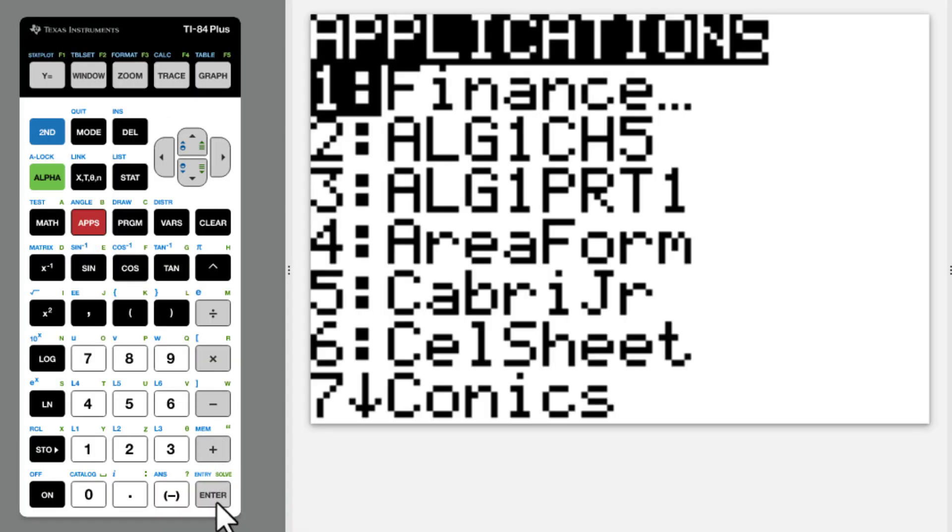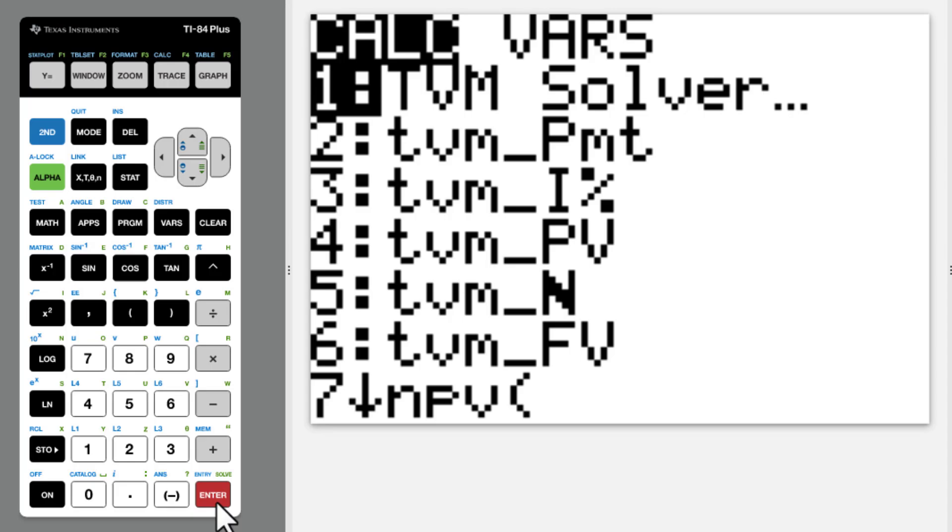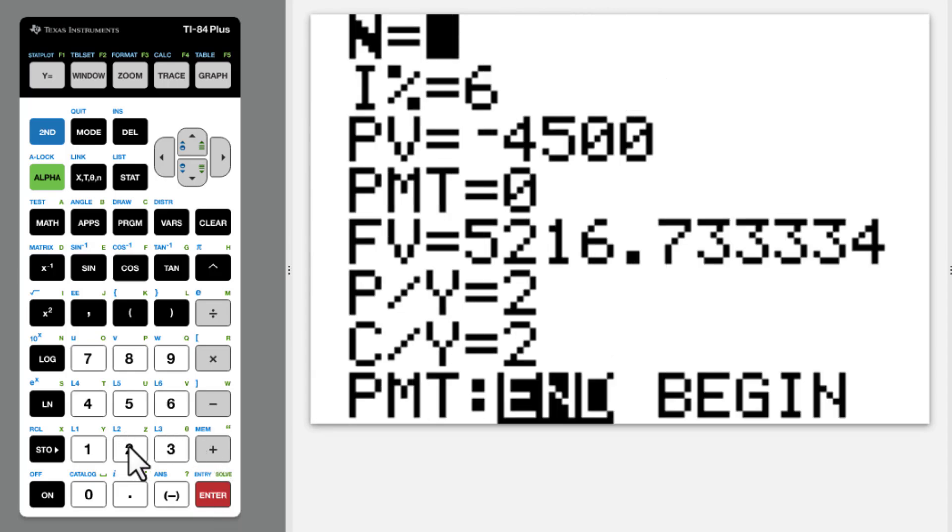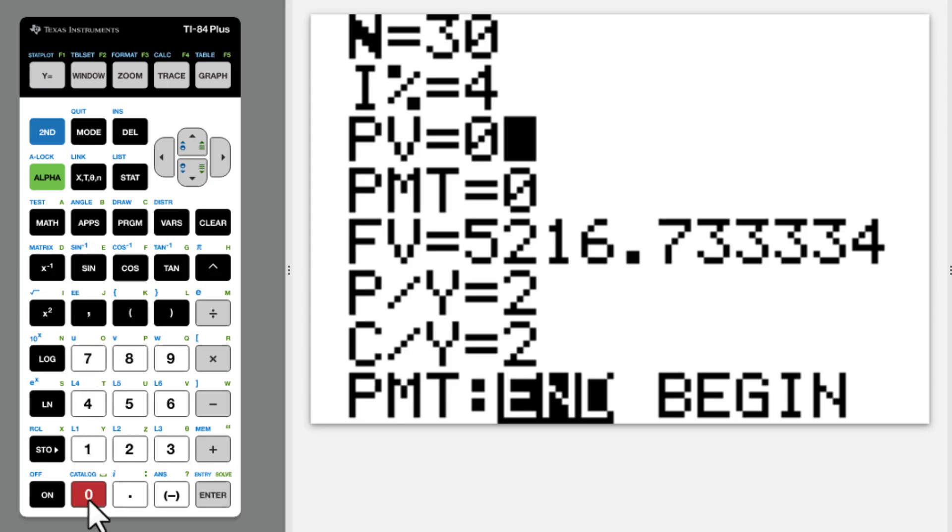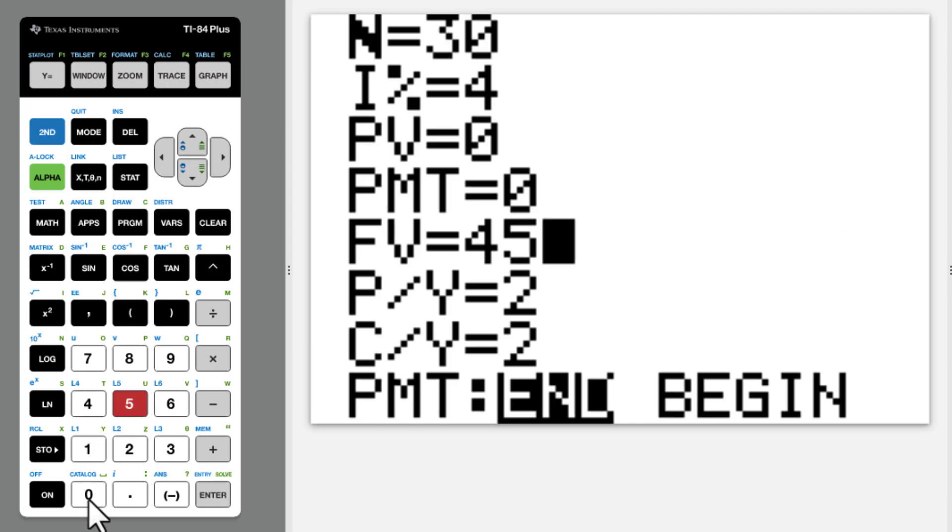Apps, Finance, Solver, Enter. N equals 2.5 times 12. Interest is 4%. Present value is something we are looking for. Nothing to do with PMT. Future value is $4500.